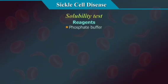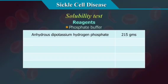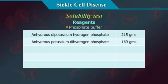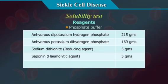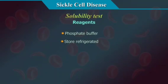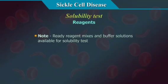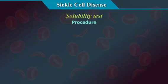Reagents for the solubility test: Phosphate buffer — anhydrous dipotassium hydrogen phosphate 215 g, anhydrous potassium dihydrogen phosphate 169 g; sodium dithionite (reducing agent) 5 g; saponin (hemolytic agent) 5 g; water to 1 litre. Store refrigerated — stable for 7 days. Note: many ready reagent mixes and buffer solutions are available in the market for the solubility test.